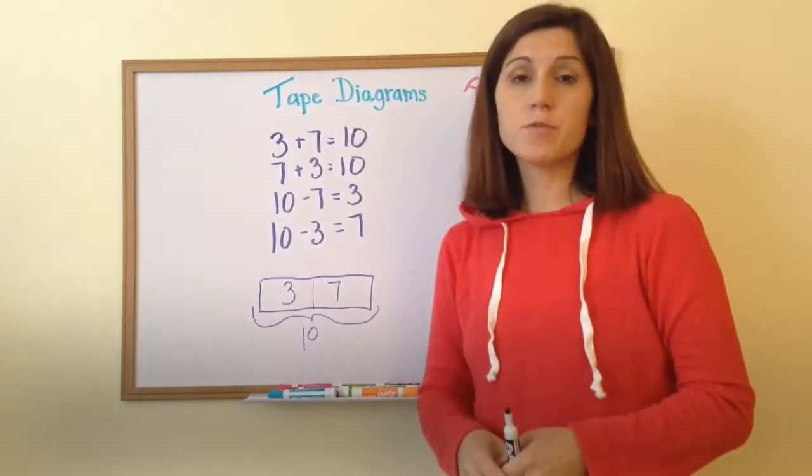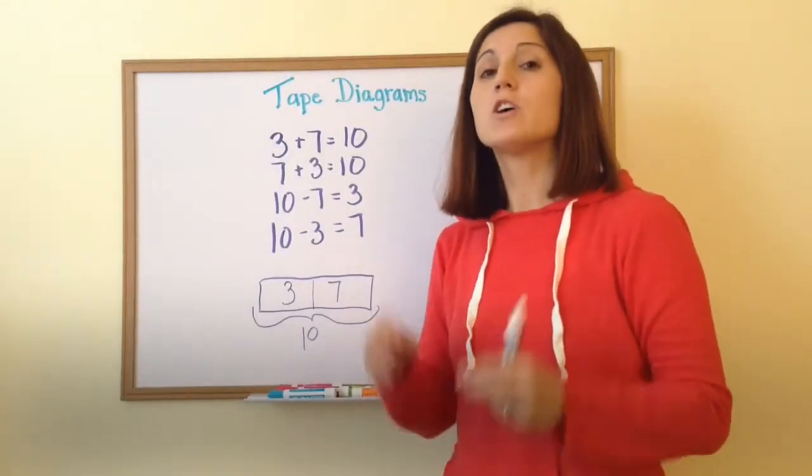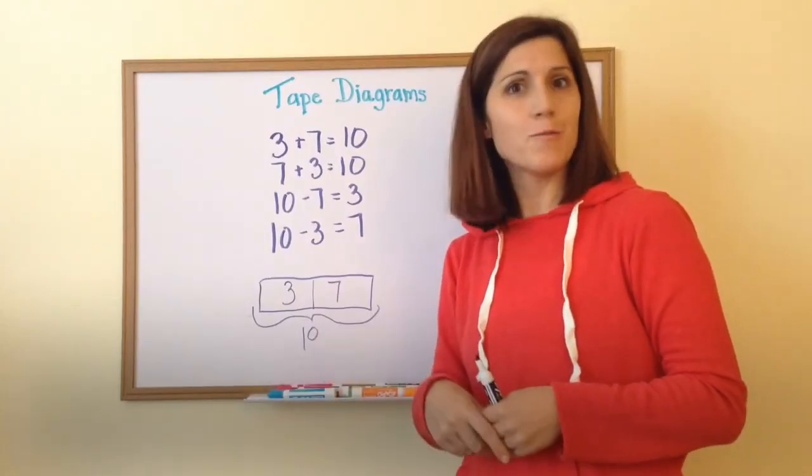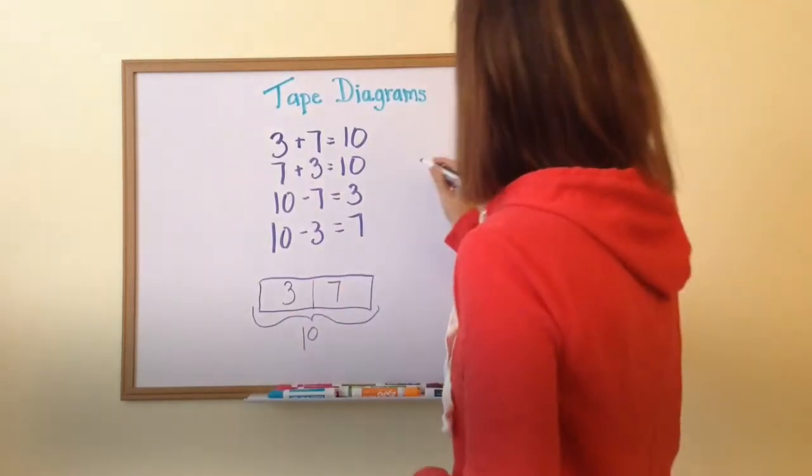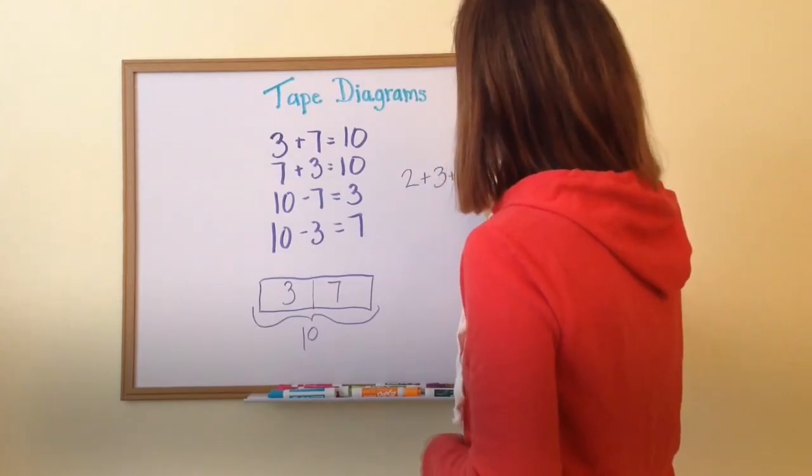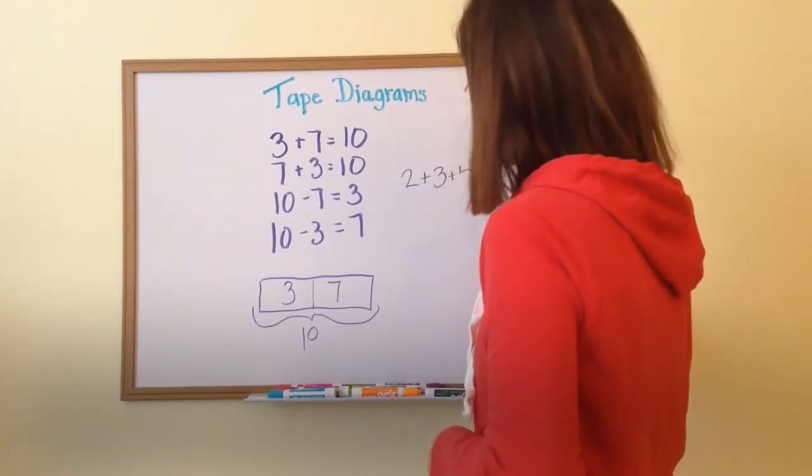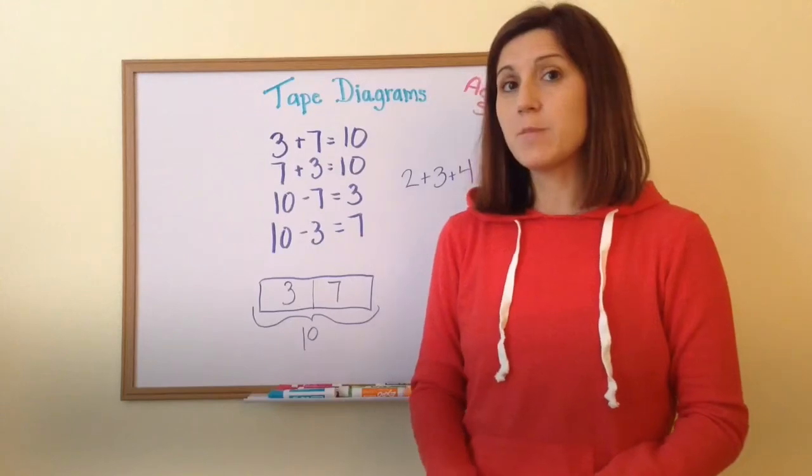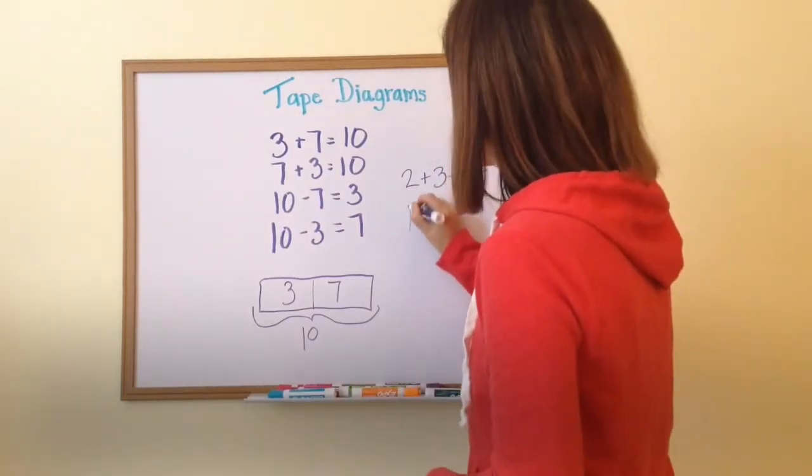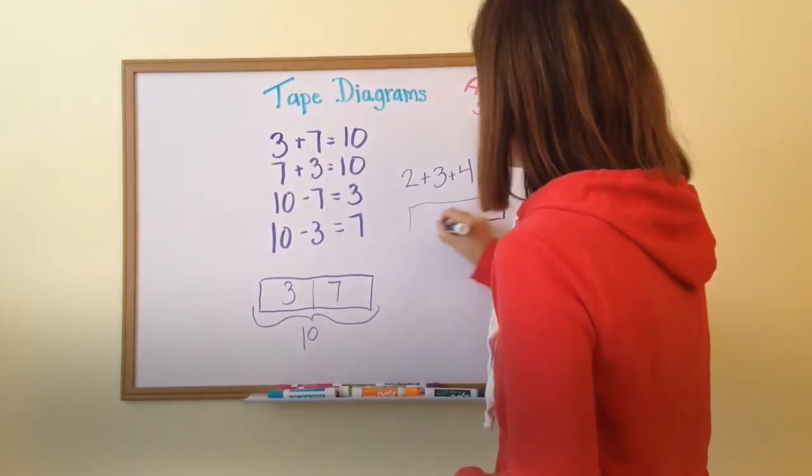So in any addition and subtraction problem, you're going to have two parts equaling one whole, unless you have more parts. What if I had two plus three plus four equals nine? How many boxes would my tape diagram have? Right, three, because I have three parts equaling one whole.